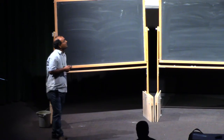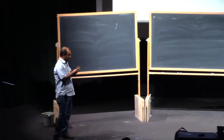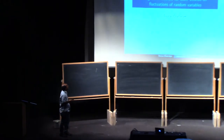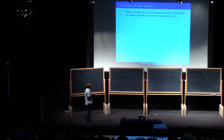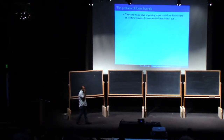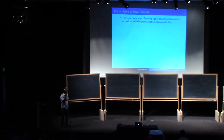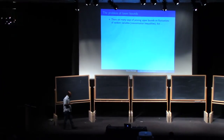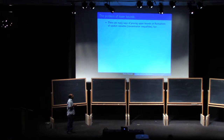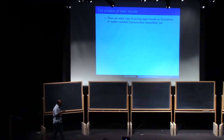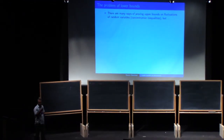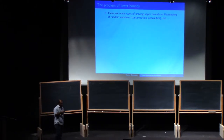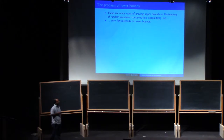I'm going to talk about a method for lower bounds on fluctuations of random variables. There are many ways of getting upper bounds on fluctuations — this broad field of concentration inequalities and variance bounds. But as I realized while thinking about a question that Yuval Paris asked me, which is actually part of the talk, there are very few methods for lower bounds.